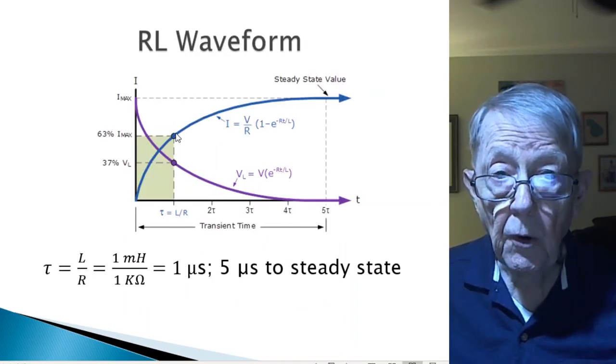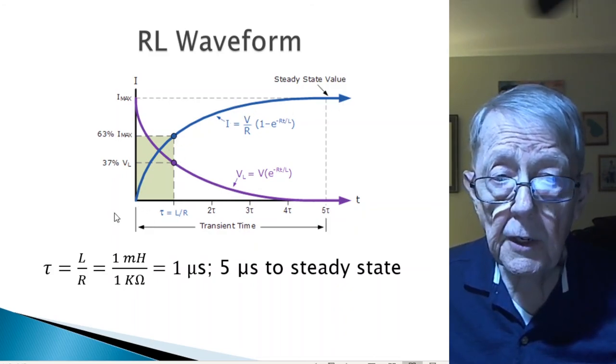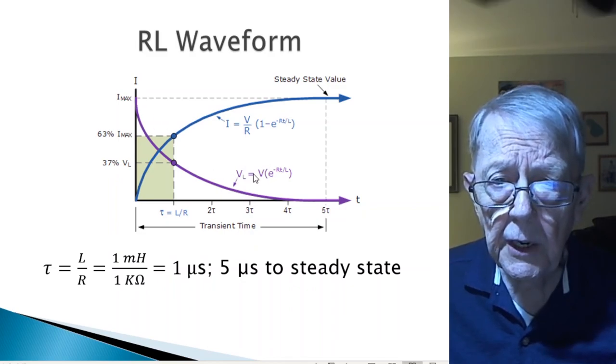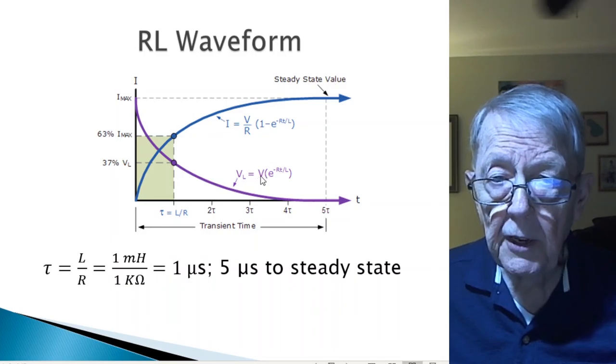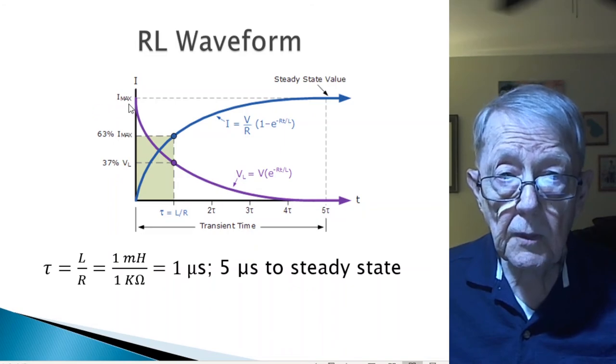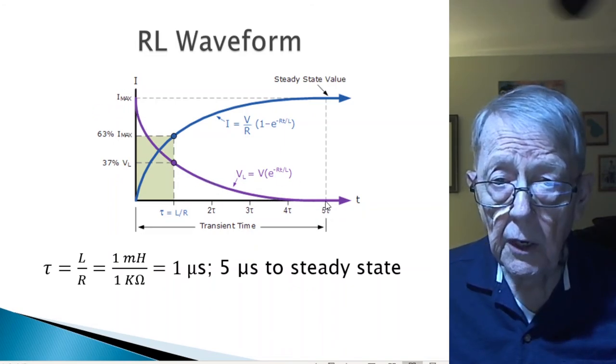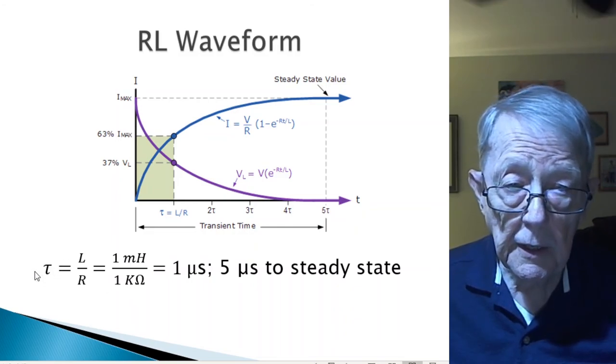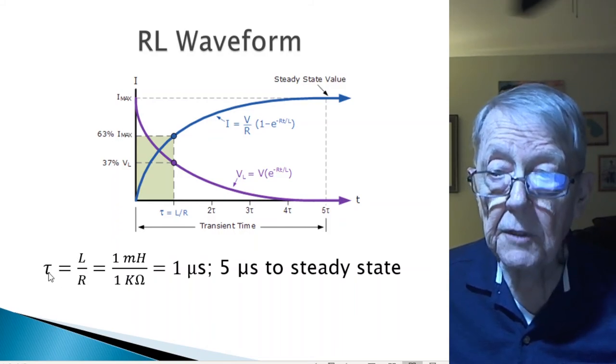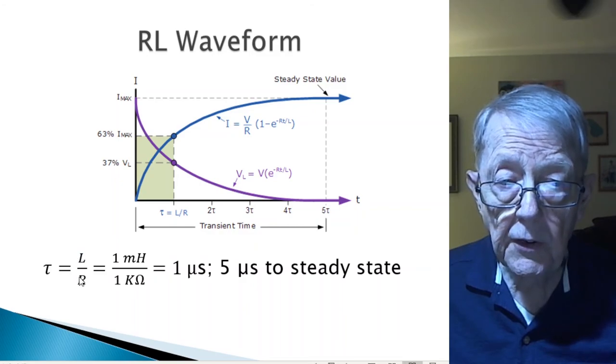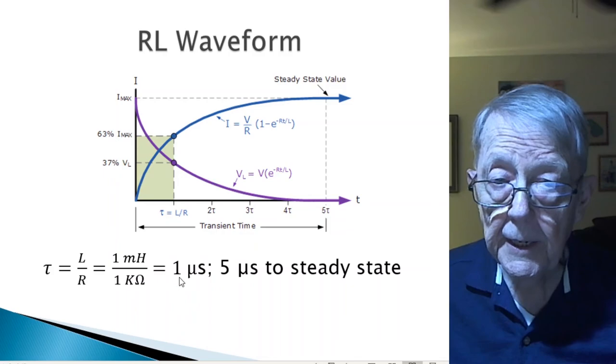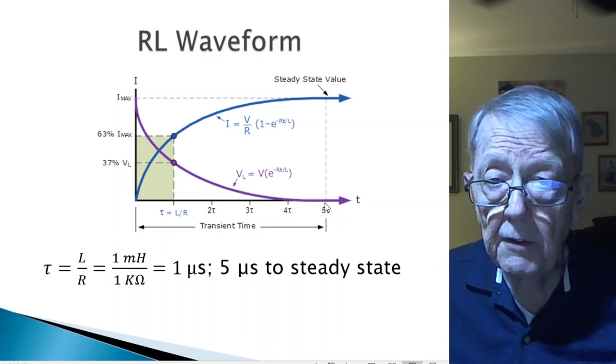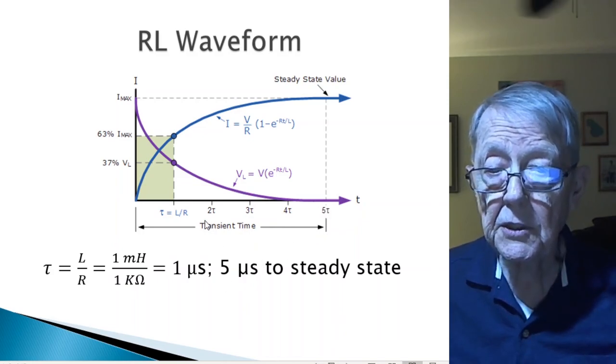This is the current waveform for that circuit, and this is the voltage across the inductor. It starts out at a maximum value of V, which is the battery voltage, 9 volts. It starts out at 9 volts and decays exponentially down to 0. This circuit has a 1 mH inductor and a 1 kOhm resistor, and the time constant for this circuit is the inductor inductance value over the resistance, which is 1 microsecond. As you can see here, tau, which is the time constant, it takes 5 time constants, or 5 microseconds, to get to a steady state condition.